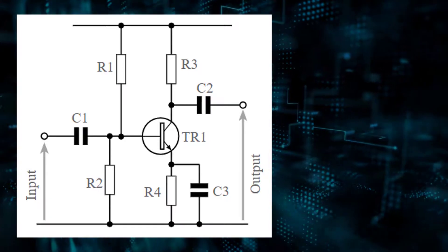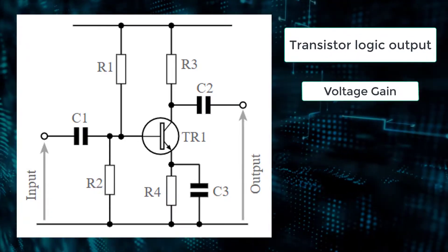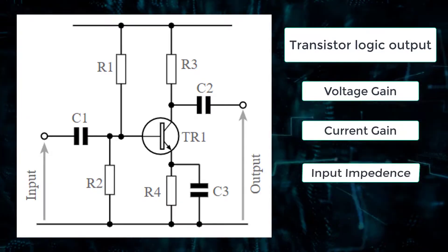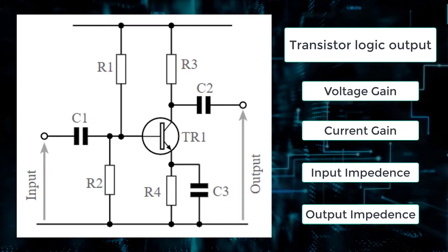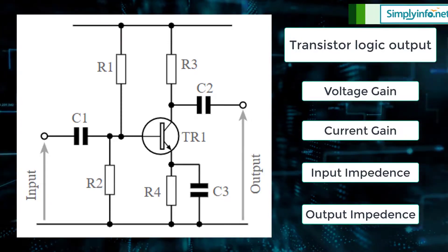The Common Emitter circuit can be used in a variety of forms. Sometimes as a transistor logic output, a directly coupled amplifier and in many areas. It is widely used providing a good compromise between voltage and current gain along with input and output impedance.